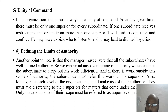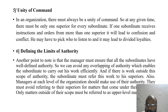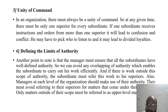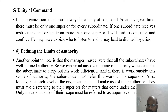Defining the limits of authority: the manager must ensure that all subordinates have well-defined authority to avoid any overlapping, which enables the subordinate to carry out his work efficiently. If there is work outside the scope of his authority, the subordinate must refer that work to his superior. Also, managers at each level of the organization should make use of their authority and avoid referring to their superiors for matters that come under their purview.